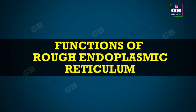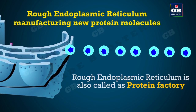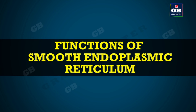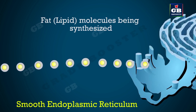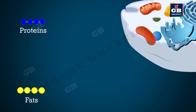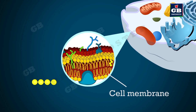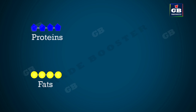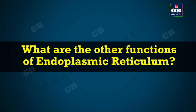The rough endoplasmic reticulum makes new protein molecules with the help of ribosomes — that is why it is also called the protein factory. The smooth endoplasmic reticulum manufactures new fat molecules. The new proteins and lipids made in the endoplasmic reticulum are used in different ways: they are used to make cell membrane, and some proteins and fats are converted to enzymes and hormones and secreted out of the cell to execute various functions.